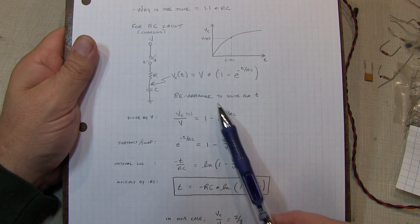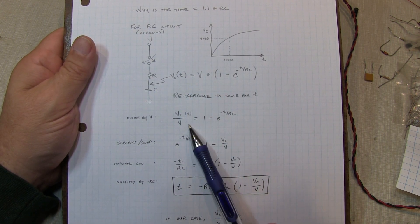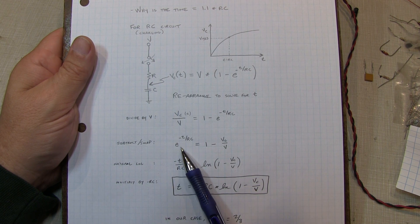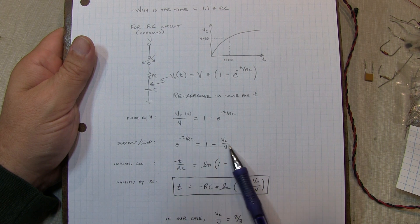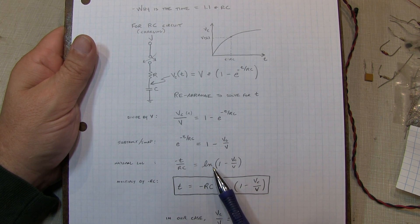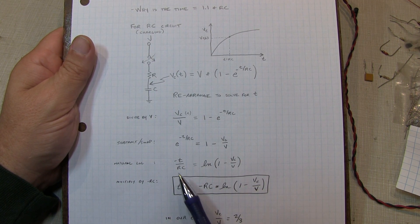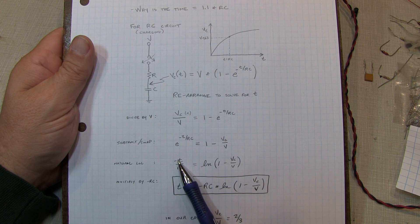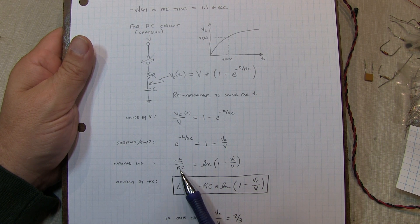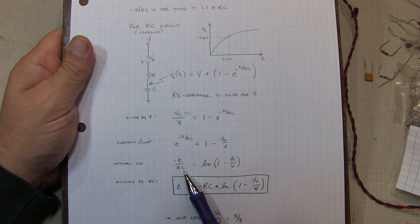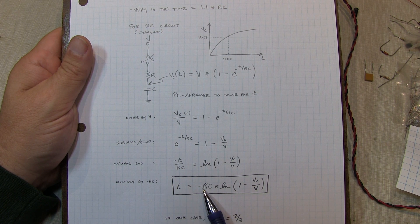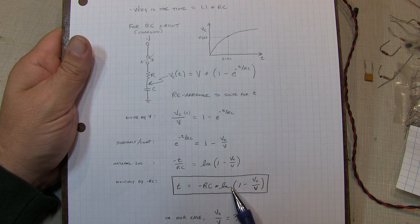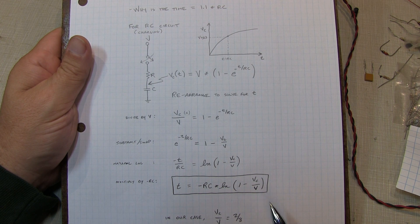Now we can do that by dividing both sides by V. That gets us to here. And then we could subtract, move terms from one side to the other to get to this point here. Take the natural log of both sides, and that gets us to the point where we've almost got T isolated over here. We simply multiply both sides by negative RC, and we're left with time is equal to minus RC times the natural log of 1 minus VC over V.